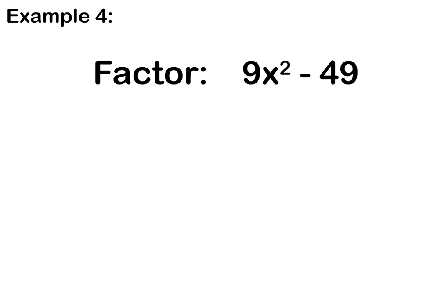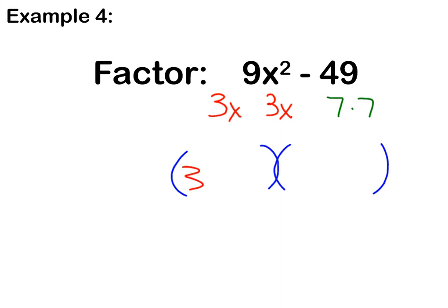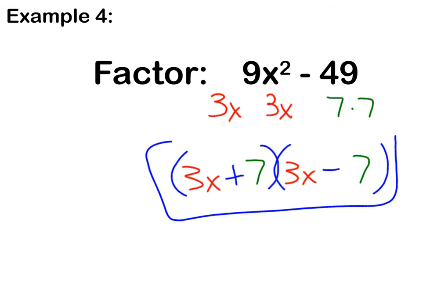Pause the video now as you try example 4. Press play to go over your answer — I believe in you. So the first thing I know is 3x times 3x gives us 9x squared. I have 7 times 7 which gives me 49. I set up my parentheses, put my first term in front, my second term in back, and finish with opposite signs. There you have it — the factored form of 9x squared minus 49.